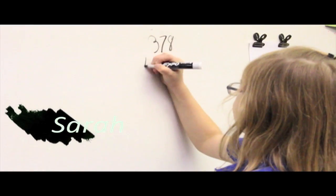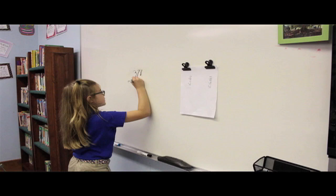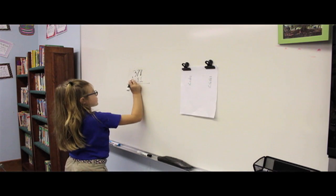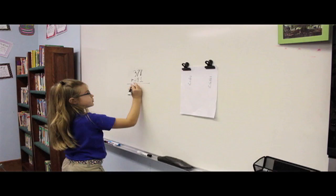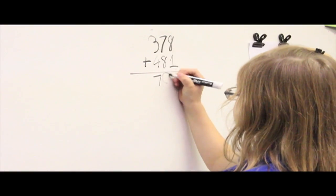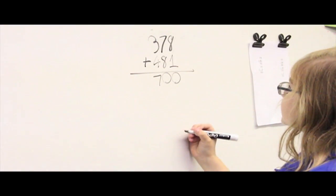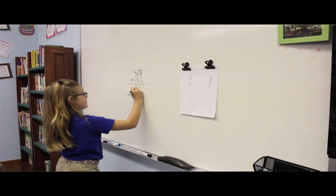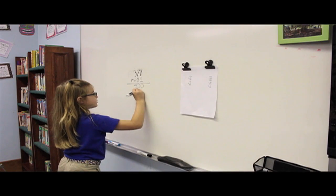378 plus 481. So 300 plus 400 equals 700. 7 tens plus 8 tens equals 15 tens, value 150.